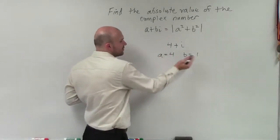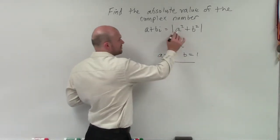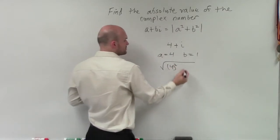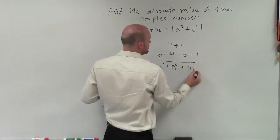So now that I know I have 4 and 1, I just need to take the square root of a squared plus b squared. So I have a squared, which would be 4 squared, plus b squared, which would be 1 squared.